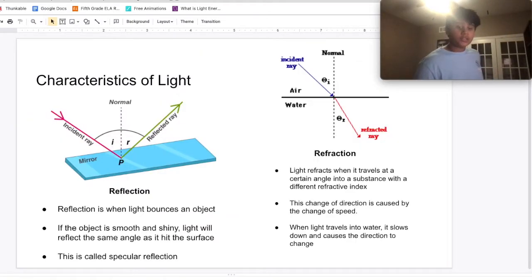Now, characteristics of light. When light bounces off a smooth and shiny object, it is called reflection. And when light changes from one medium to another, it is called refraction. For example, when light travels from air to water, it slows down and changes the direction of the light ray.